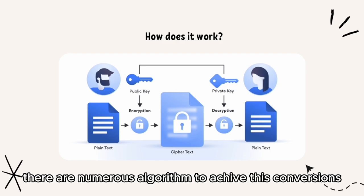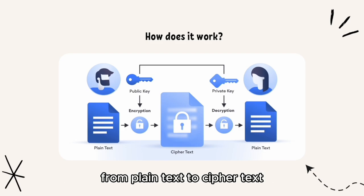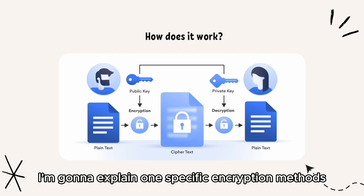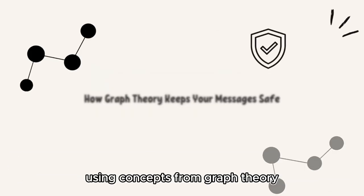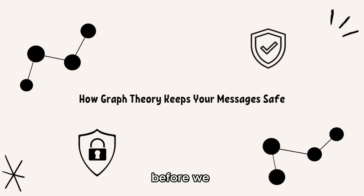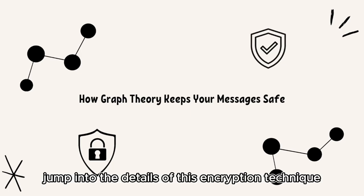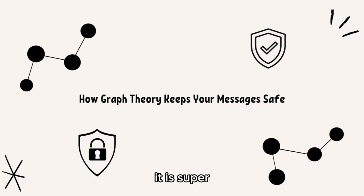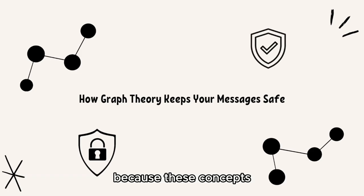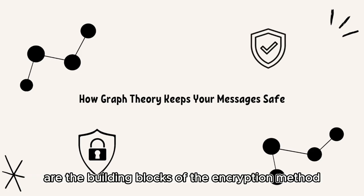There are numerous algorithms to achieve these conversions from plain text to cipher text. But in this video, I'm going to explain one specific encryption method using concepts from graph theory combined with linear algebra. Before we delve into the details of this encryption technique, it is super important to understand some basic concepts in graph, because these concepts are the building blocks of the encryption method we're going to discuss.